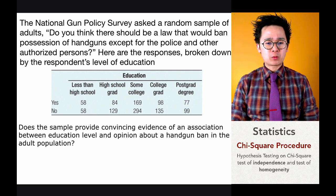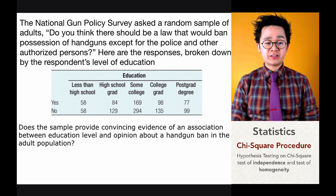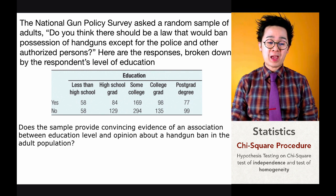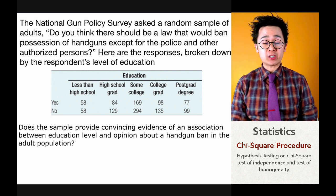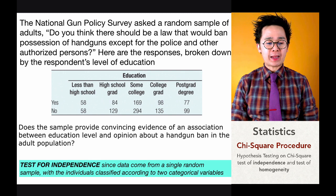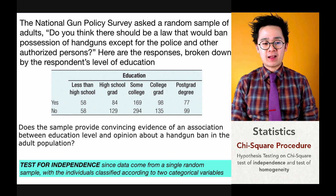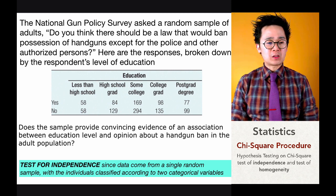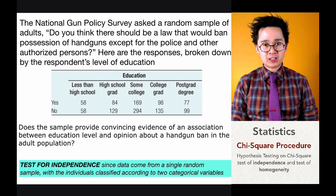In this case, we are tasked to find if the sample provides convincing evidence of an association between education level and opinion about a handgun ban in the adult population. The first thing we will do is write our null and alternative hypothesis.